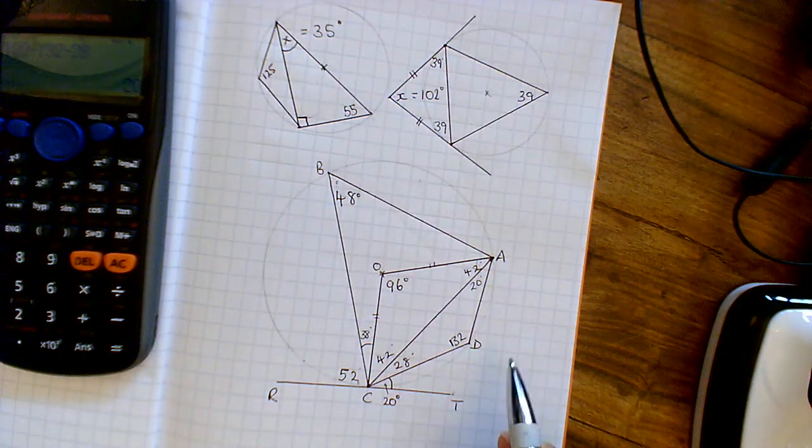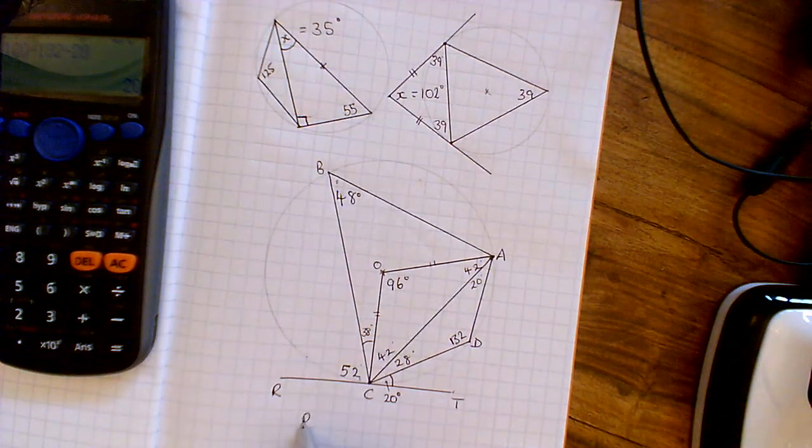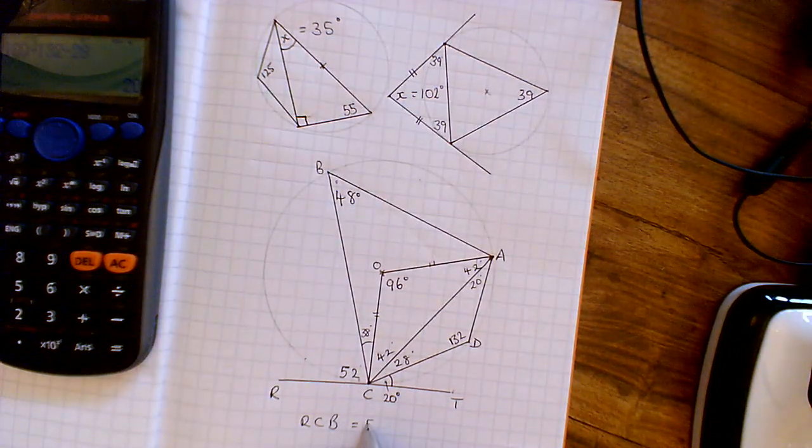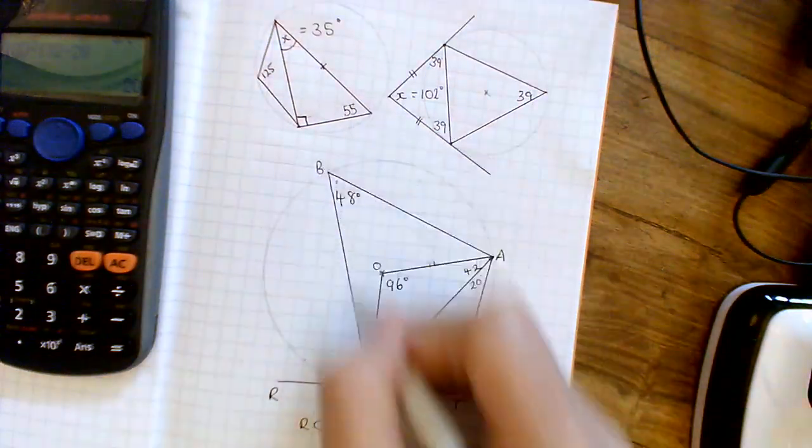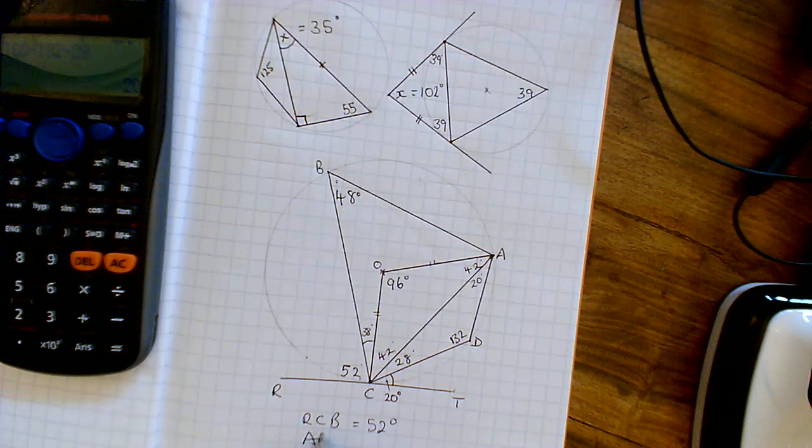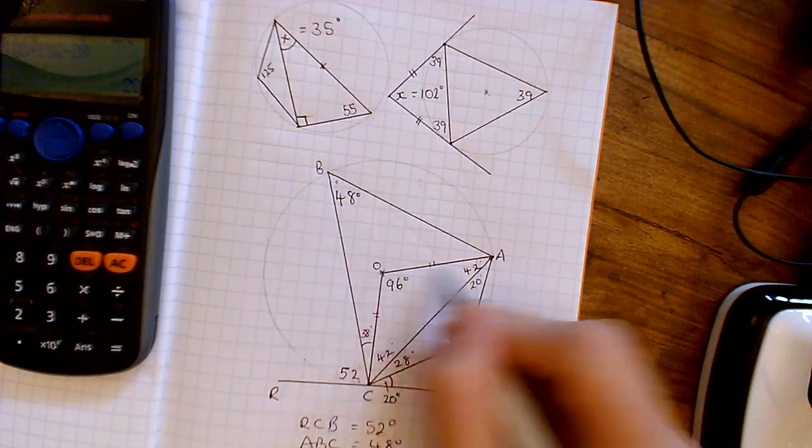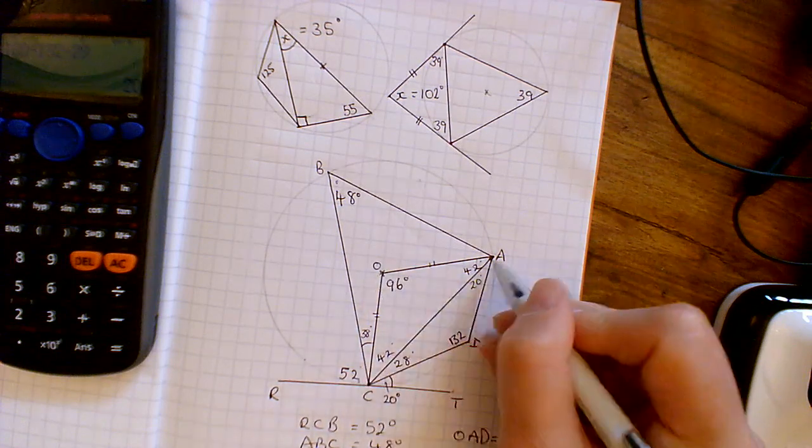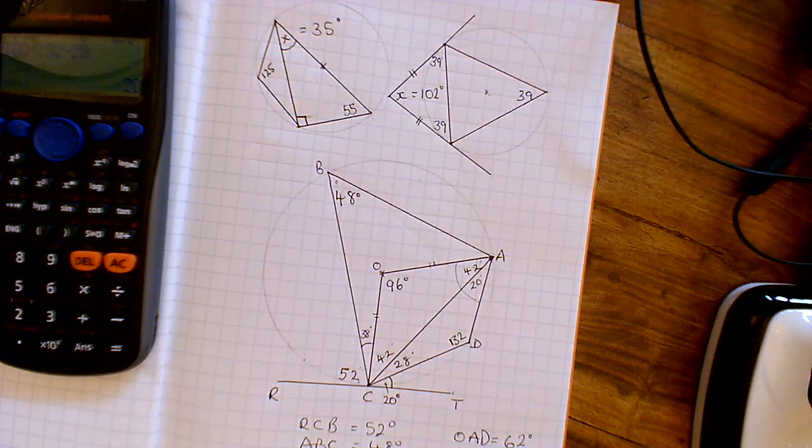I can't remember which angles I was after. And I think, well, I think that was it, wasn't it? Because one of the questions was RCB. So RCB. So from R, go across to C, go up to B. Makes this angle down here of 52 degrees. Another angle I was asked for was ABC. So ABC. So I'm drawing off this top angle. ABC equals 48 degrees. And another one I was asked for was OAD. And OAD is equal to O to A to D is 62. So it's both them together. 62 degrees. And that's me done.